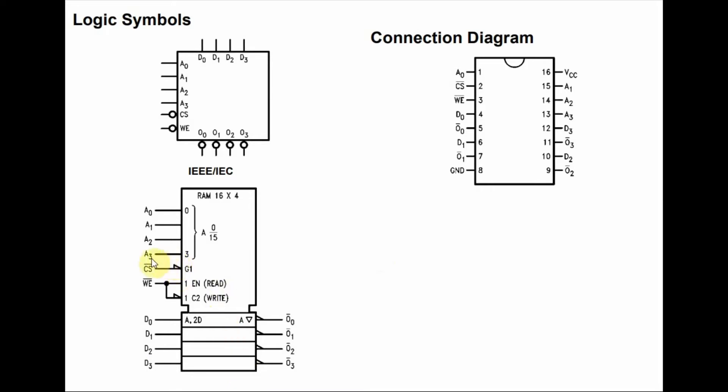This IC has two control pins: chip select and write enable. Chip select, which is active low, is normally grounded so that the IC can be accessible. Then write enable, which is also active low, is used to write the 4-bit number into any one of the memory locations selected by the address pins.